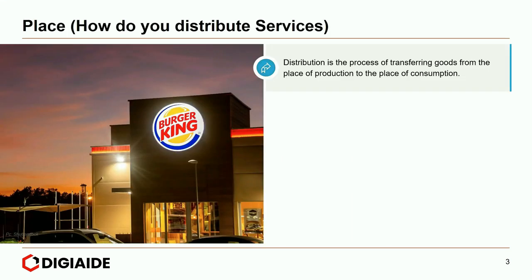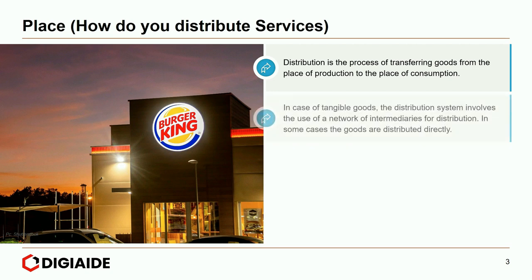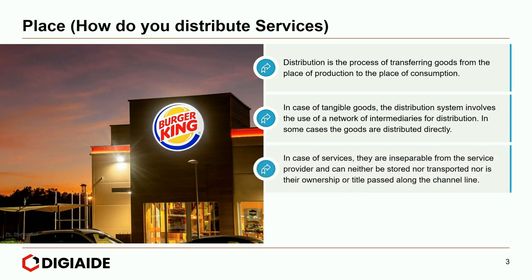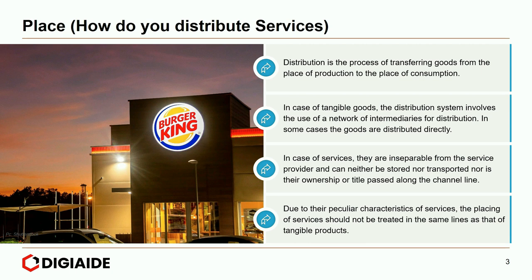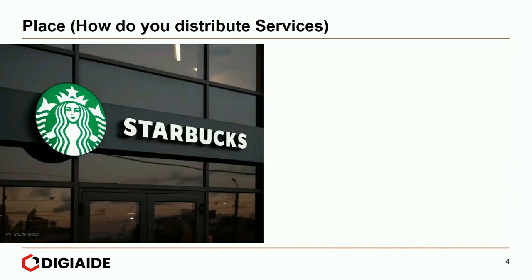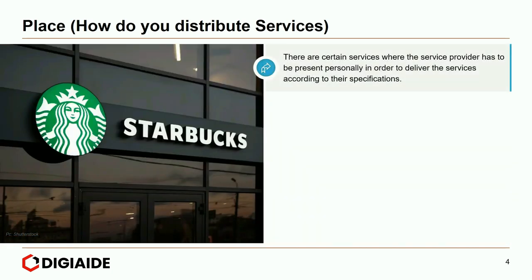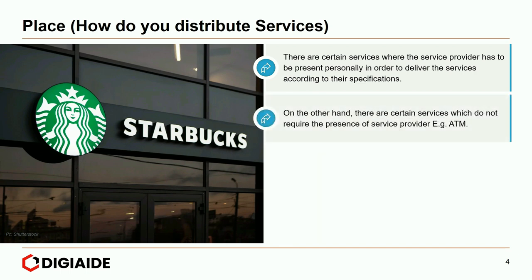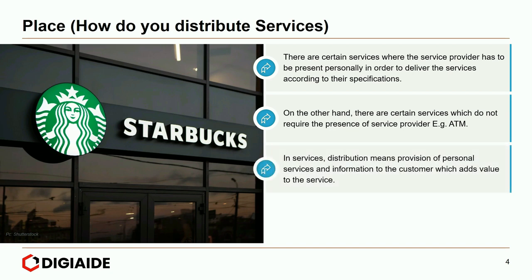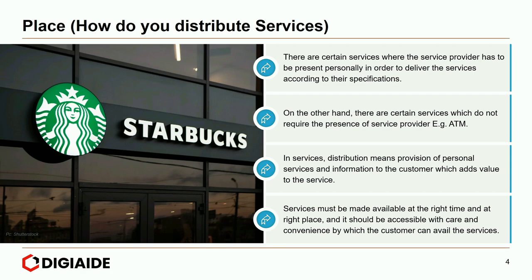How do you distribute services? Distribution is a process of transferring goods from the place of production to the place of consumption. In case of tangible goods, the distribution system involves a network of intermediaries. In the case of services, they are inseparable from the service provider and can neither be stored nor transported, nor is their ownership passed along the channel line. Due to the peculiar characteristics of services, placing of services should not be treated in the same line as tangible products. There are certain services where the service provider has to be present personally to deliver the services — for example Starbucks. On the other hand, there are certain services which do not require the presence of a service provider — example, ATM.